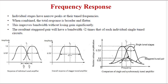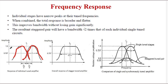The frequency response is a very important point. Individual stages have narrow peaks at their tuned frequency. Looking at the first graph — response of individual tuned amplifiers — this is the response of the first stage and this is the response of the second stage. The maximum relative gain is 1, and the 0.707 level gives the bandwidth. This separation is the bandwidth Delta 1.